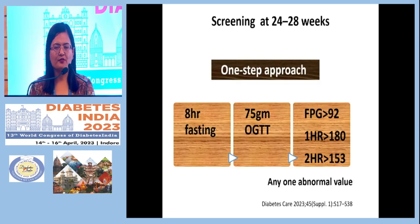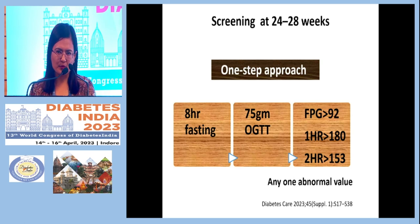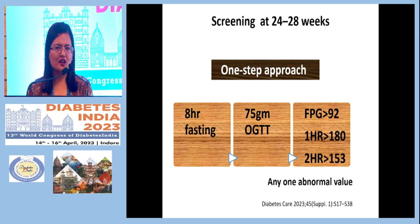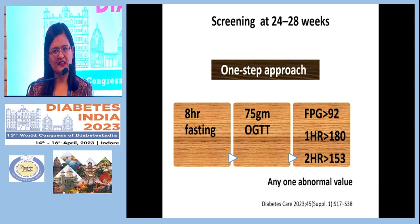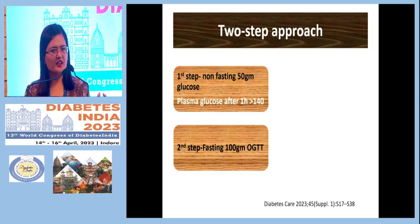ADA recommends the IADPSG criteria, which is a one-step approach: pregnant females at 24 to 28 weeks are given a 75-gram glucose OGTT. If fasting glucose is more than 92, one-hour glucose more than 180, or two-hour glucose more than 153 — if any one value is positive — the patient has gestational diabetes.